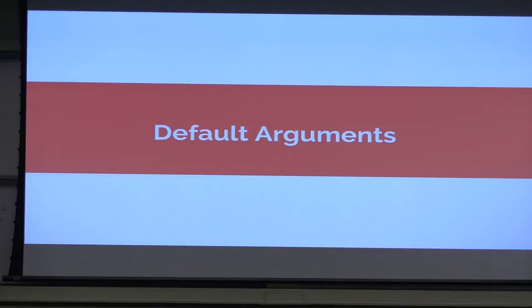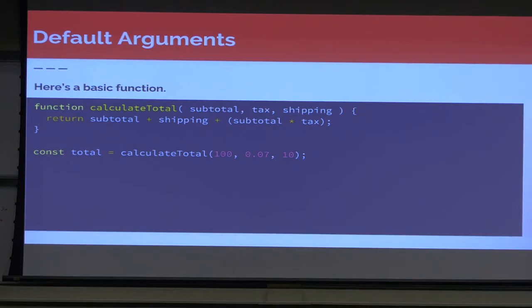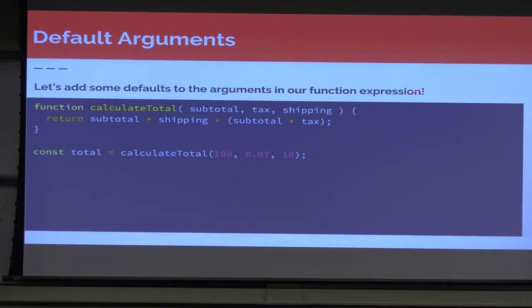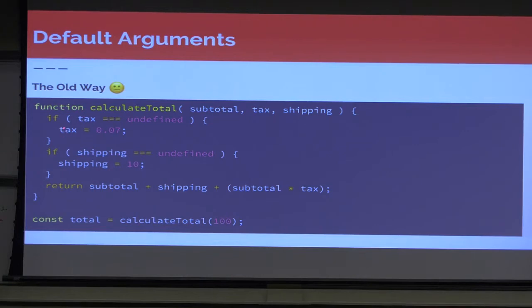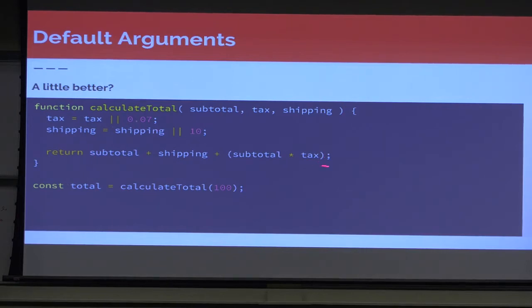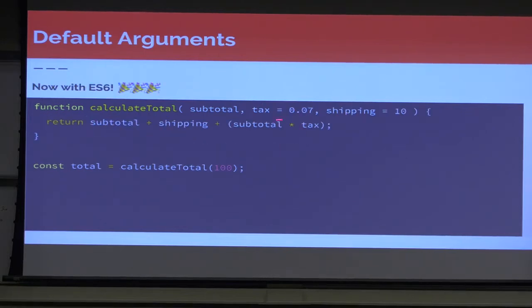Another awesome thing ES6 gives us is default arguments in JavaScript. Here we have a basic function to calculate the total based on subtotal, tax rate, and shipping charge — returning subtotal plus shipping plus subtotal times tax. The old way to set defaults was to check if tax or shipping equals undefined and then set them, but that added five or six extra lines to our function. With ES6 default arguments, we're back to the same line length we had with no defaults, but we have our defaults built right into the function signature, so we know they'll always be set even if not passed in.